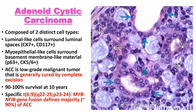In classic adenoid cystic carcinoma, the two distinct cell types are: luminal cells in the luminal spaces, positive for luminal markers like CK7 and CD117; and myoepithelial-like cells surrounding the basement membrane-like material, positive for myoepithelial markers like p63, CK5/6, calponin, and others. This is a low-grade tumor when classic features are present - actually generally cured by complete excision with excellent survival. These patients generally don't need radiation or chemotherapy, though if you send them to Oncotype or similar tests they'll come back with a high score because they're triple negative - but clinically we know they behave very well.